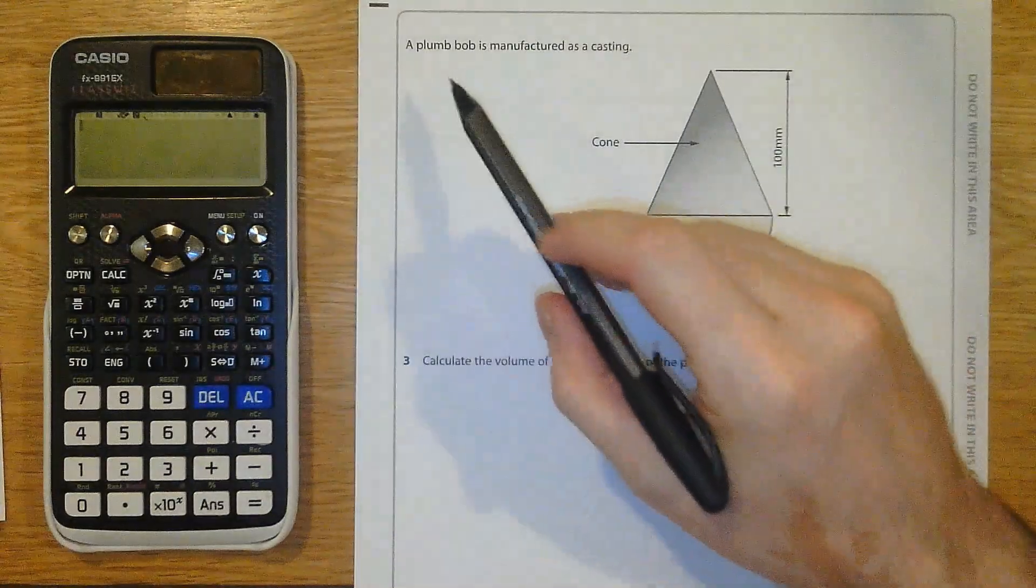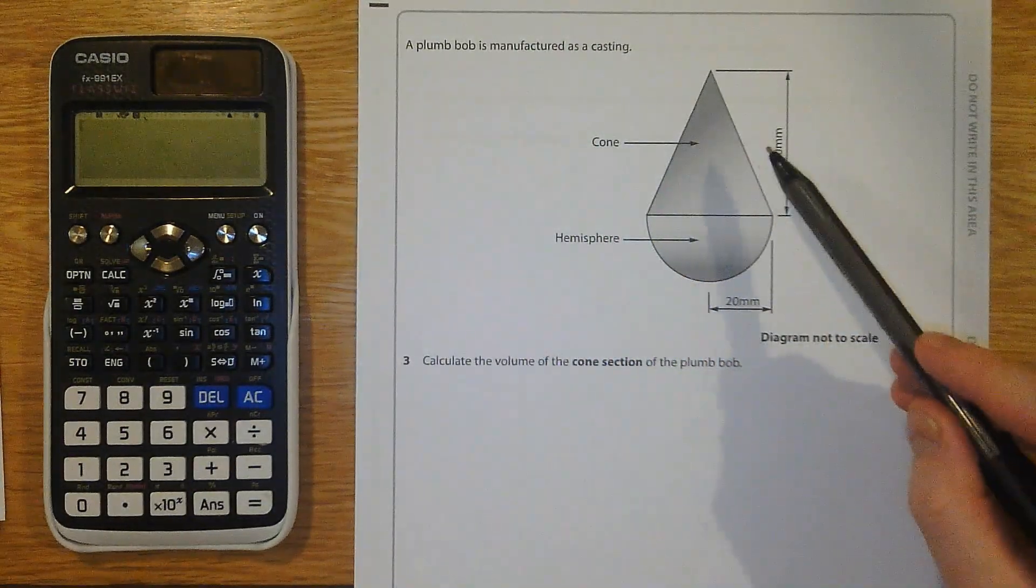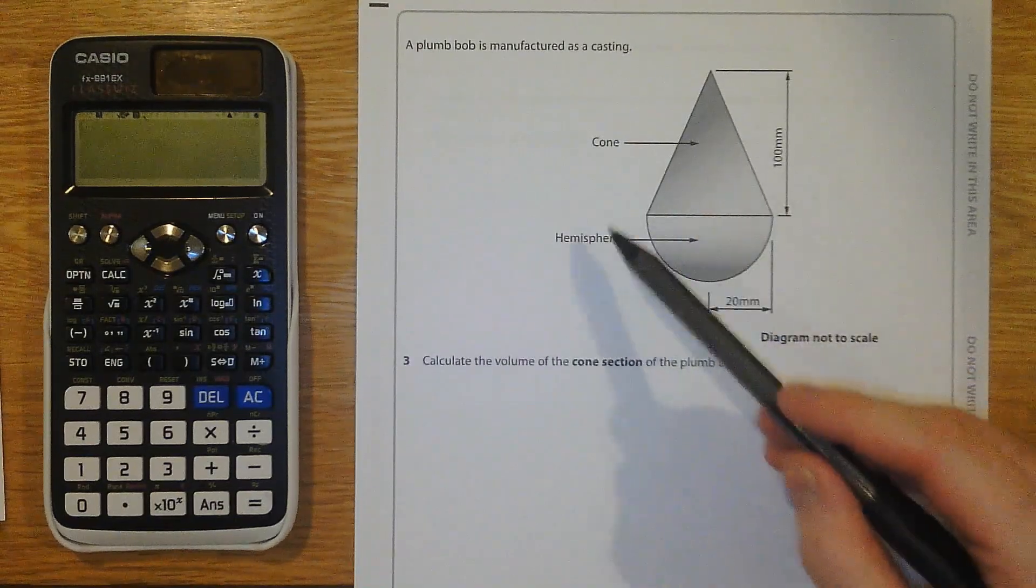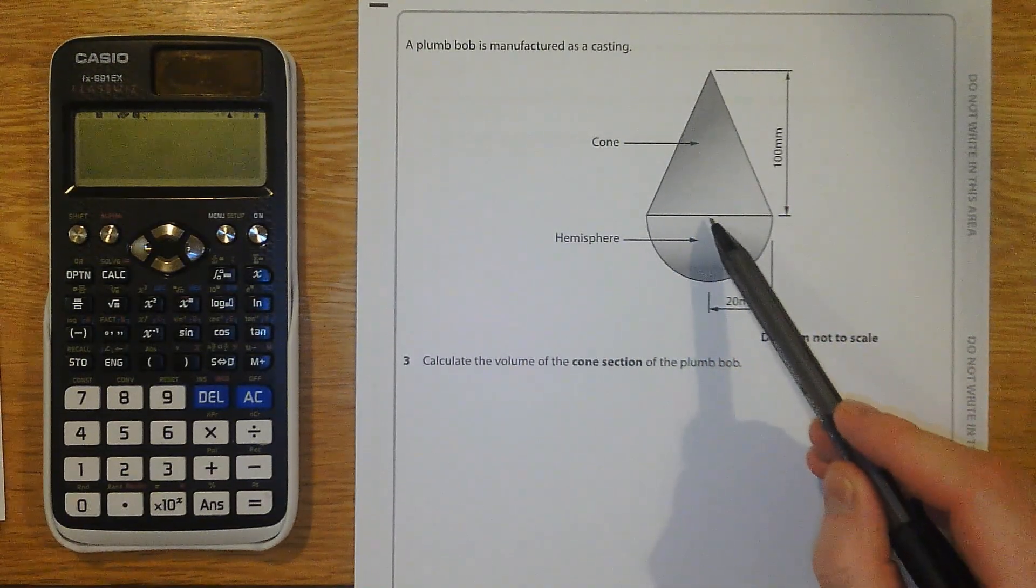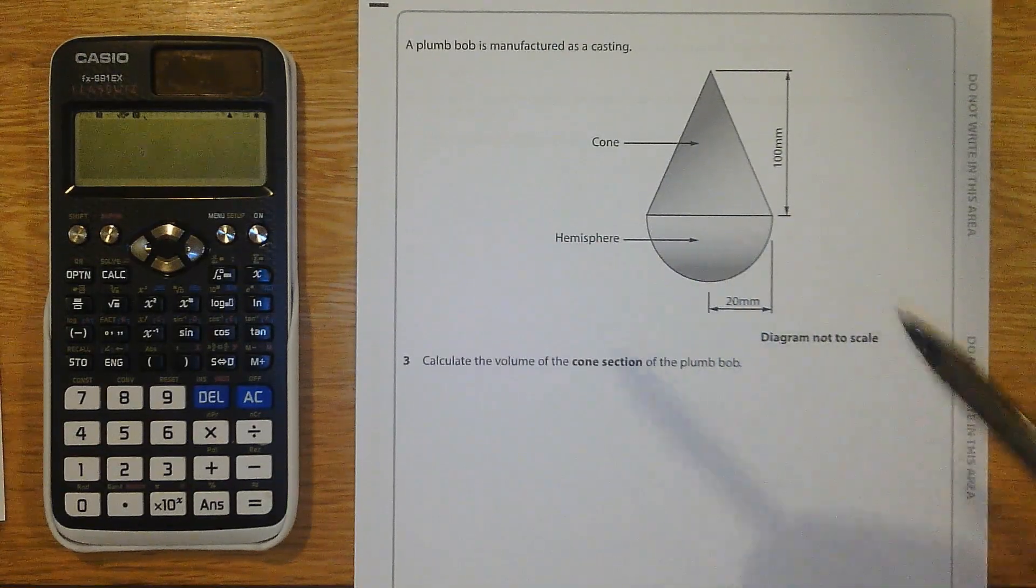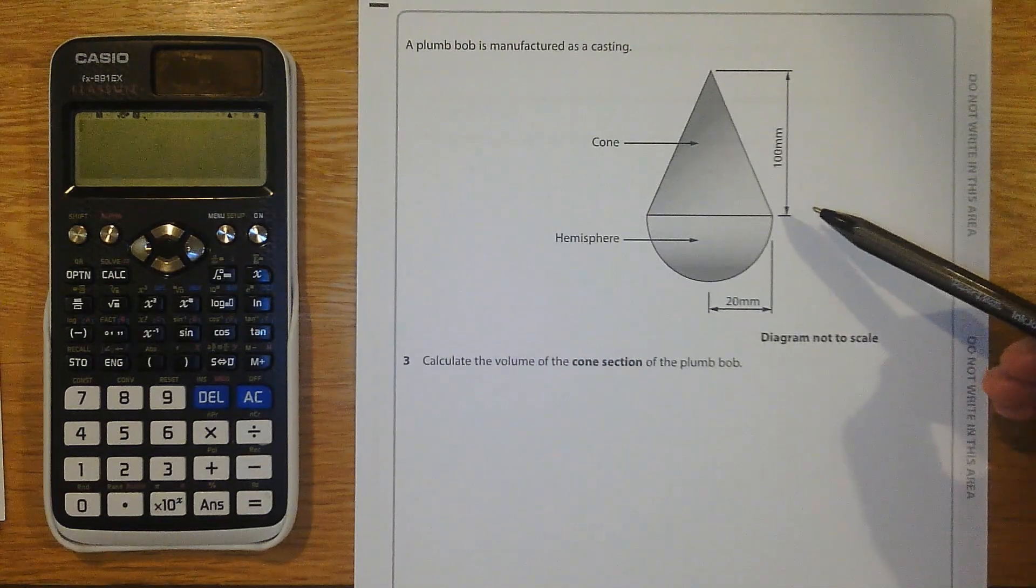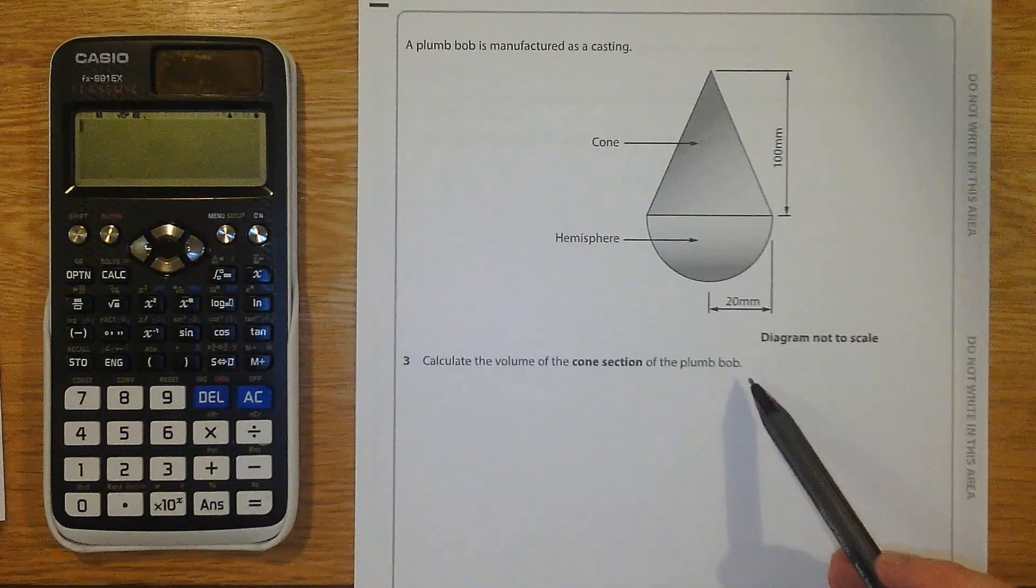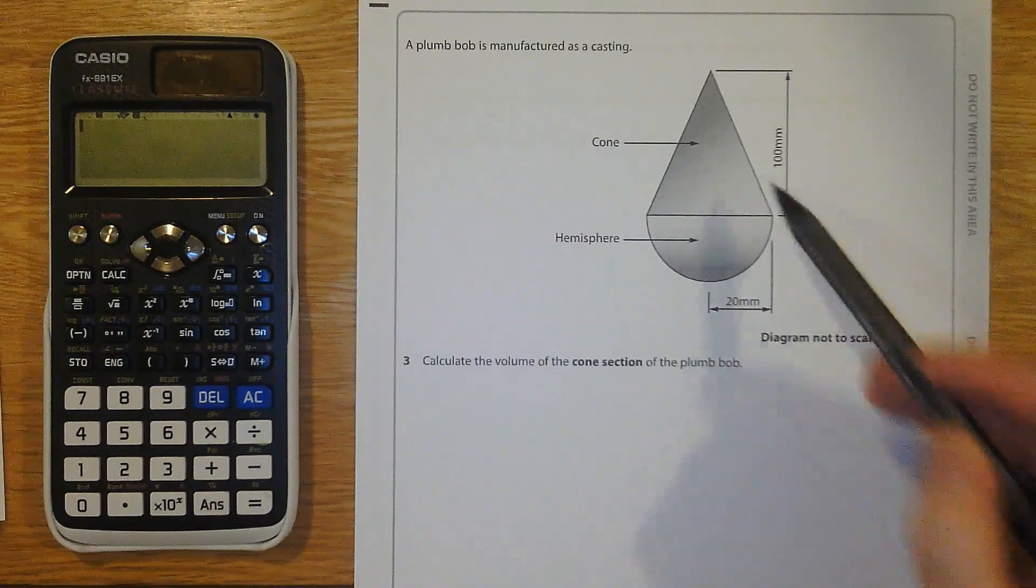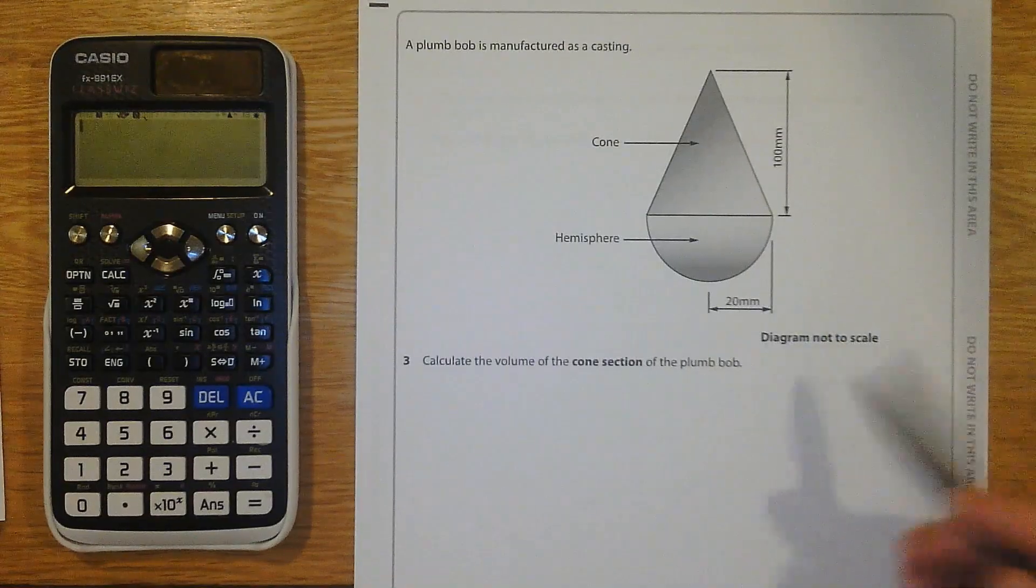Question three. A plumb bob is manufactured as a casting. And we can see the plumb bob here. Cone on top, hemisphere on the bottom. This is the radius of both the hemisphere and also the radius of the base of the cone as well. Here's the perpendicular height of the cone. Calculate the volume of the cone section of the plumb bob. So I'm just asked for the cone section. So we can completely ignore the hemisphere.